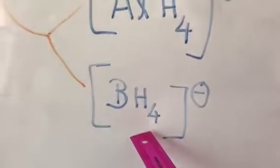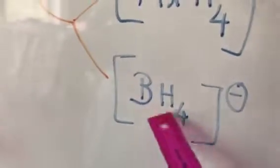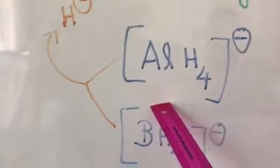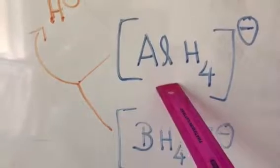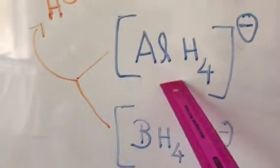Both these reducing agents are used for reducing aldehydes and ketones. When aldehydes and ketones are treated with sodium borohydride, we get either primary or secondary alcohols. Whereas when the same aldehydes and ketones are treated with lithium aluminium hydride, we get hydrocarbons. So this one is a more powerful reducing agent.